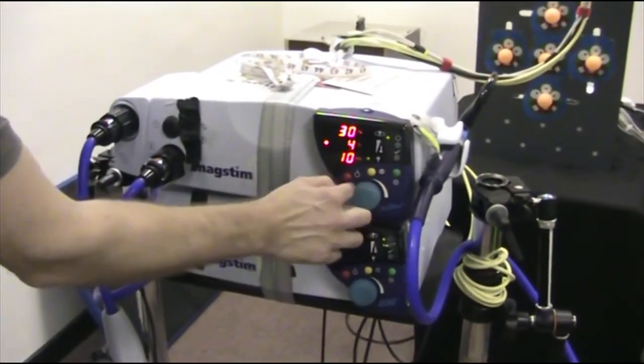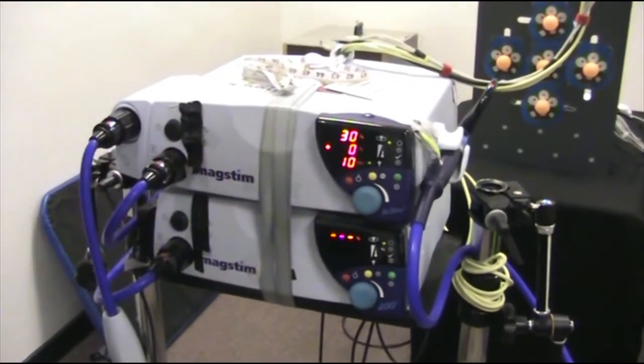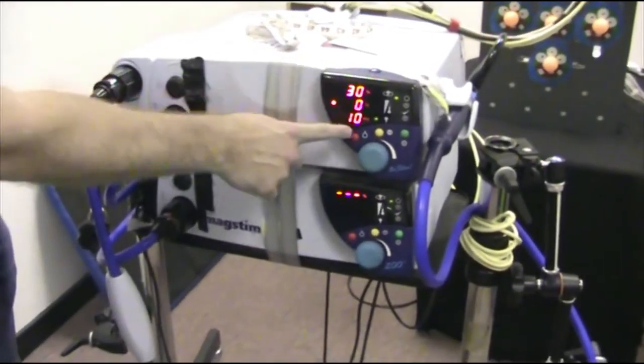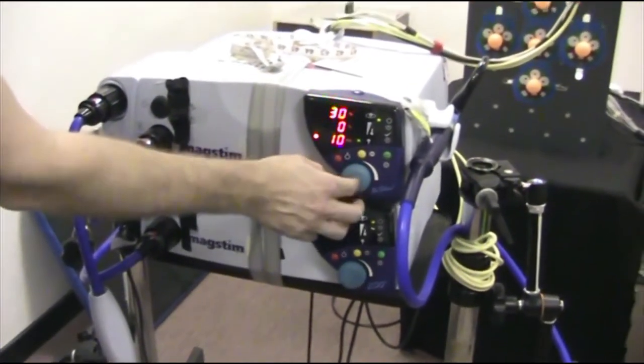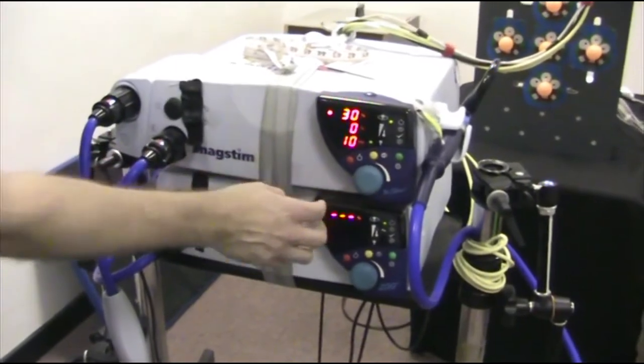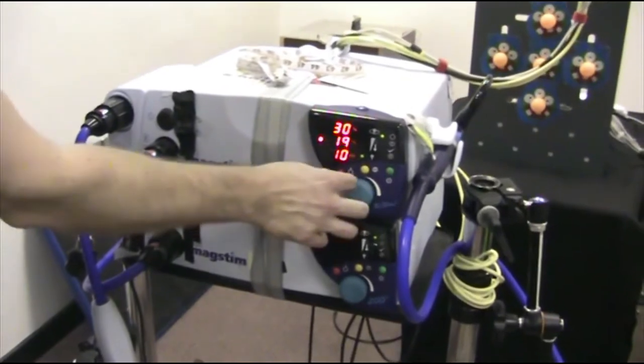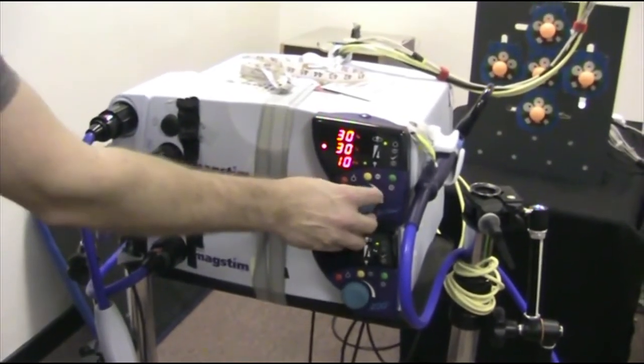So we can turn that one to zero. Now we have a single pulse of TMS at 30%. If we want two pulses, then we can have two pulses like this.